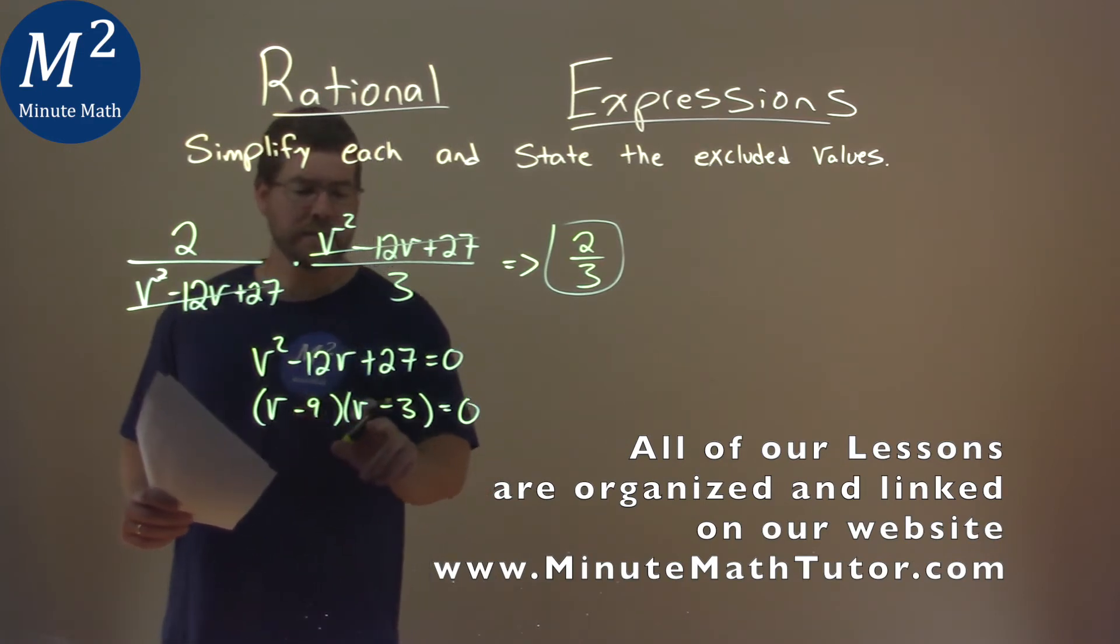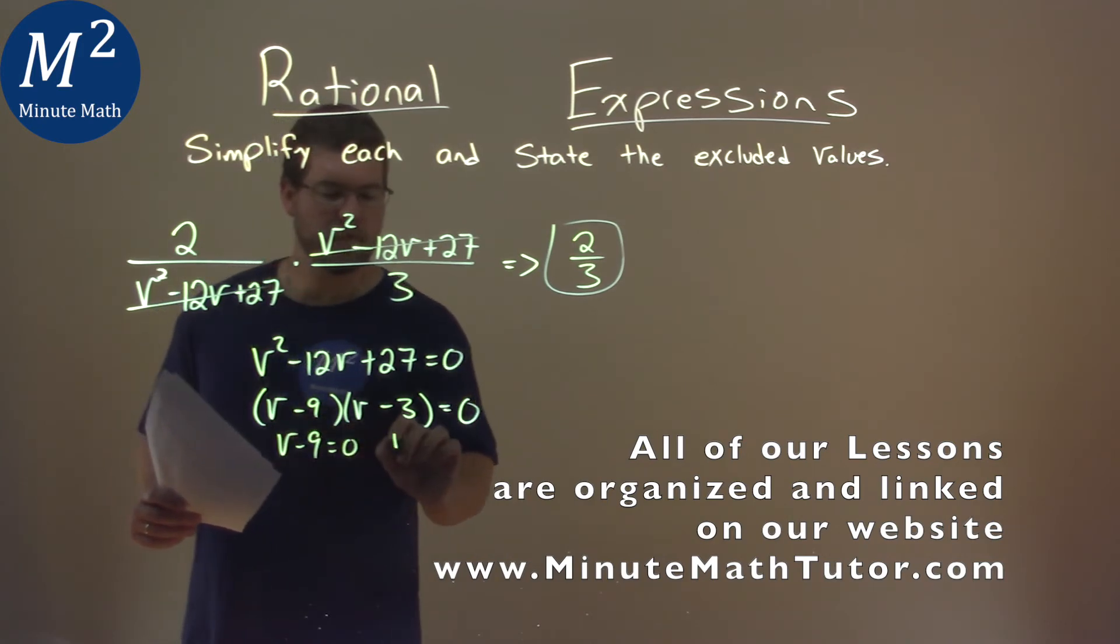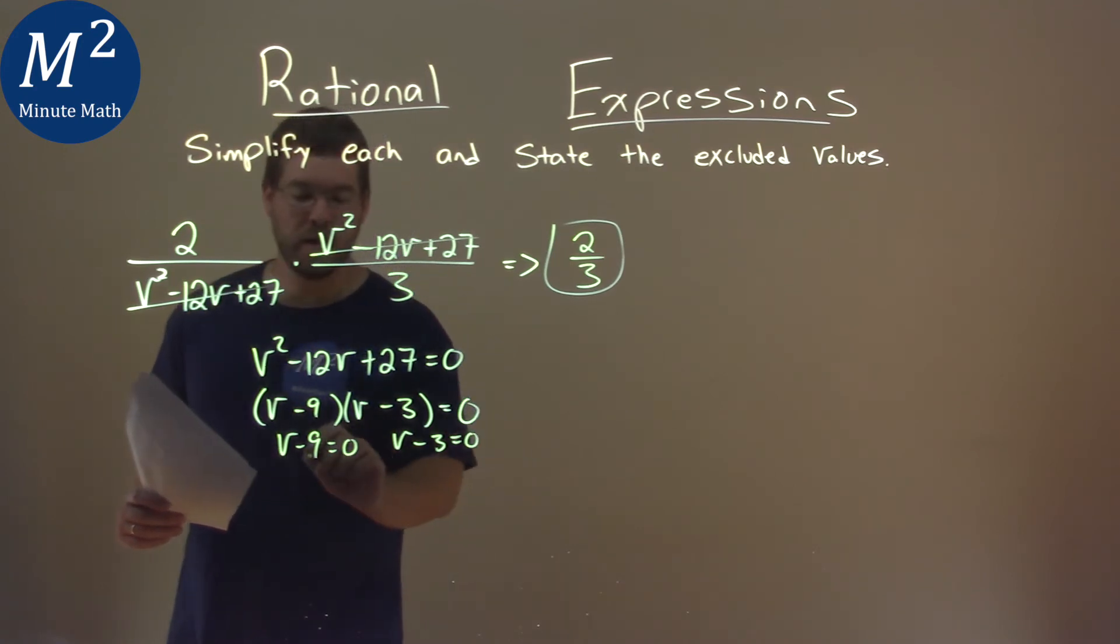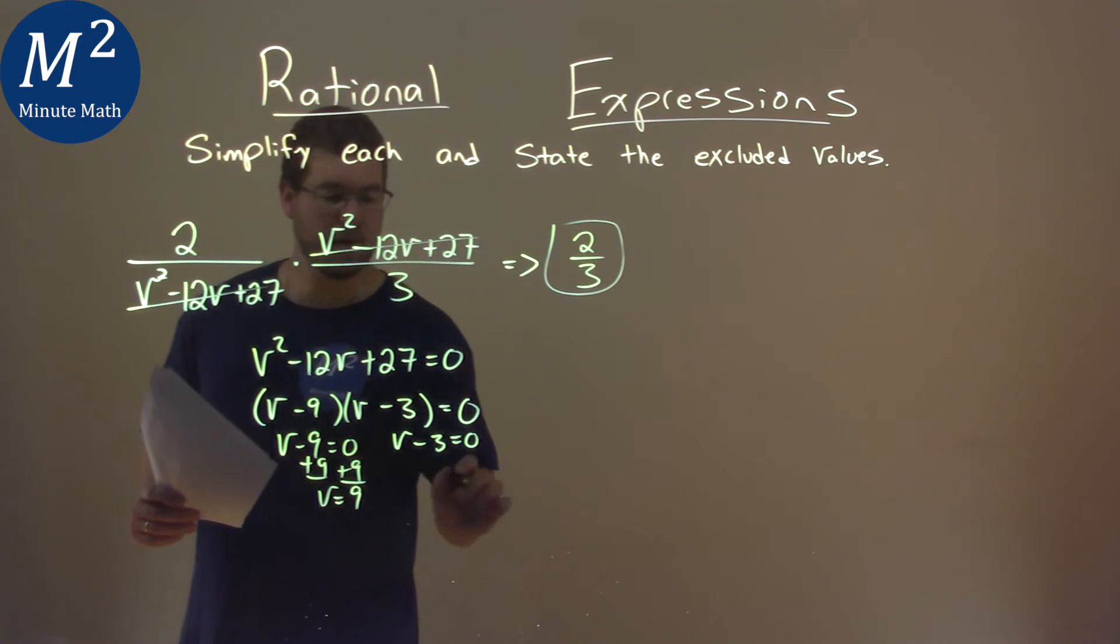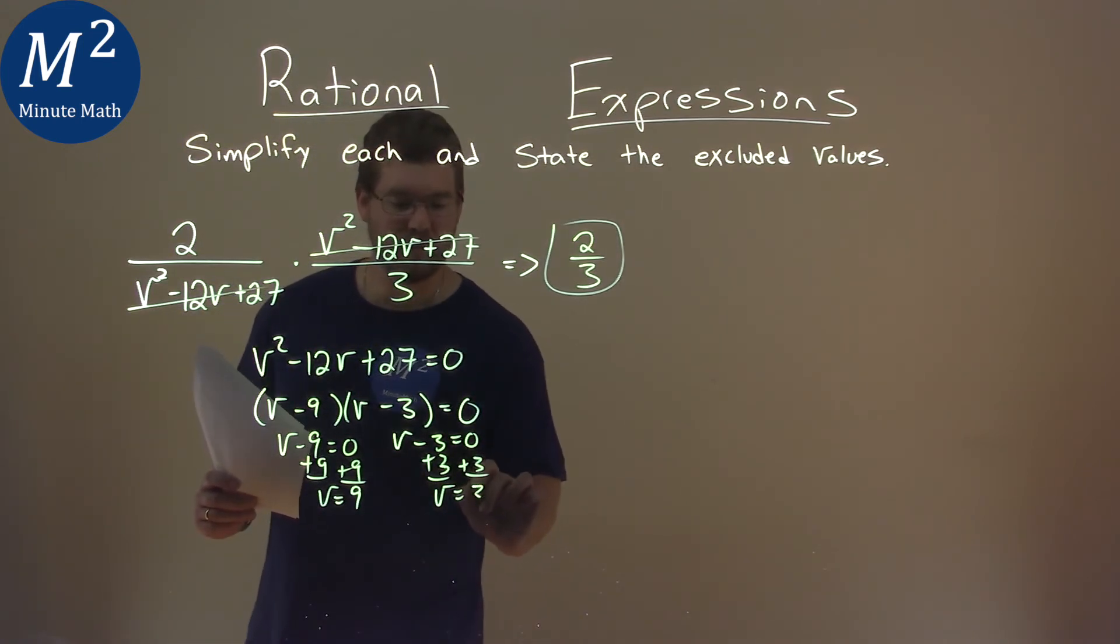So now we can set each of these parts equal to 0 individually to solve. So we have v minus 9 equals 0, and v minus 3 equals 0. Add a 9 to both sides, and v equals positive 9. Add a 3 to both sides, and v equals positive 3.